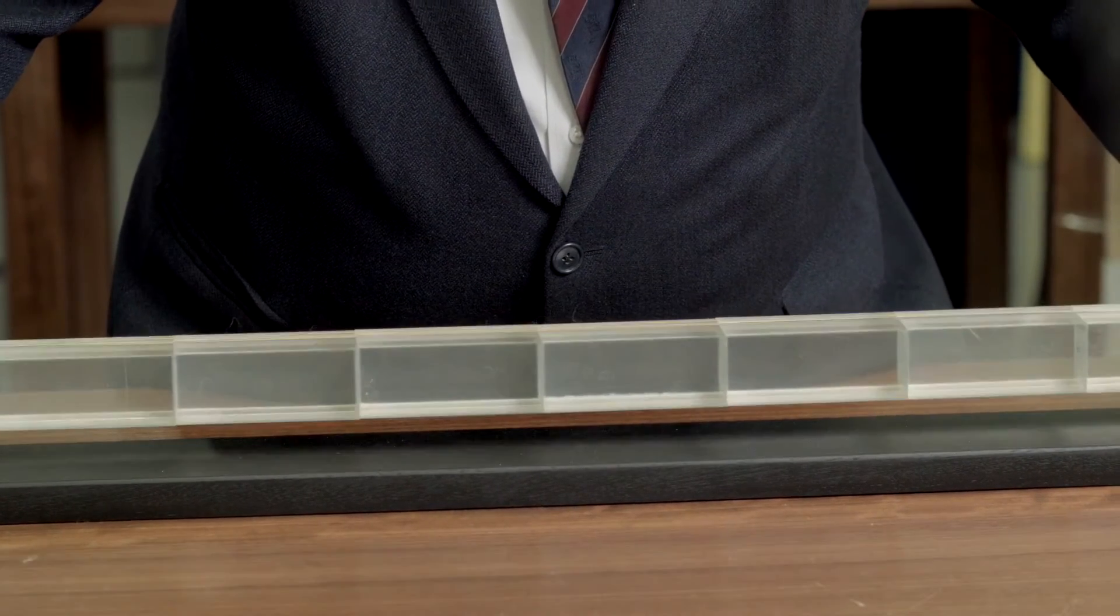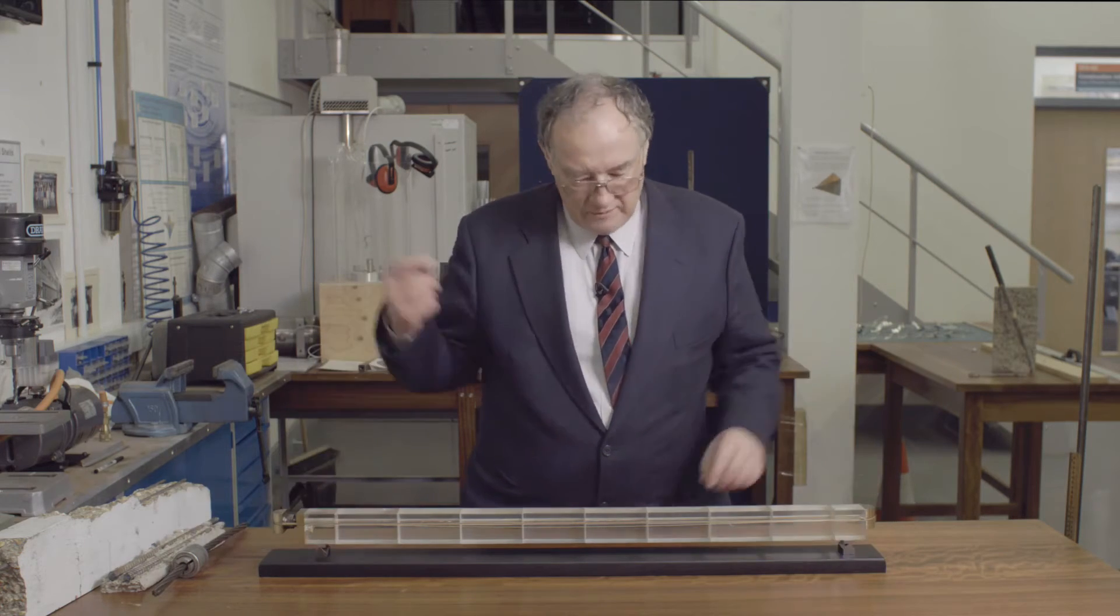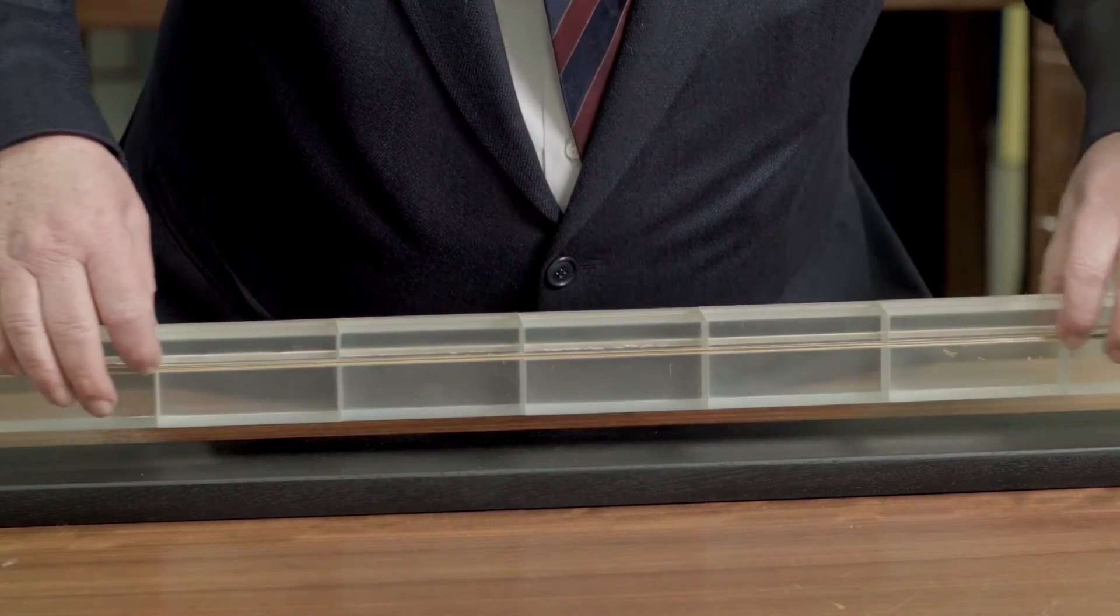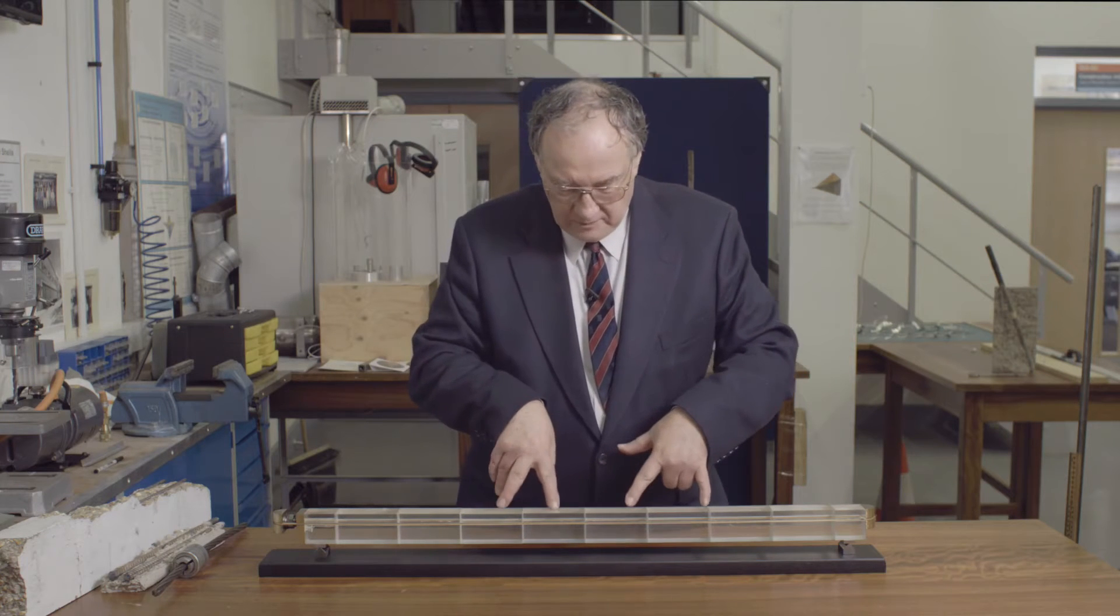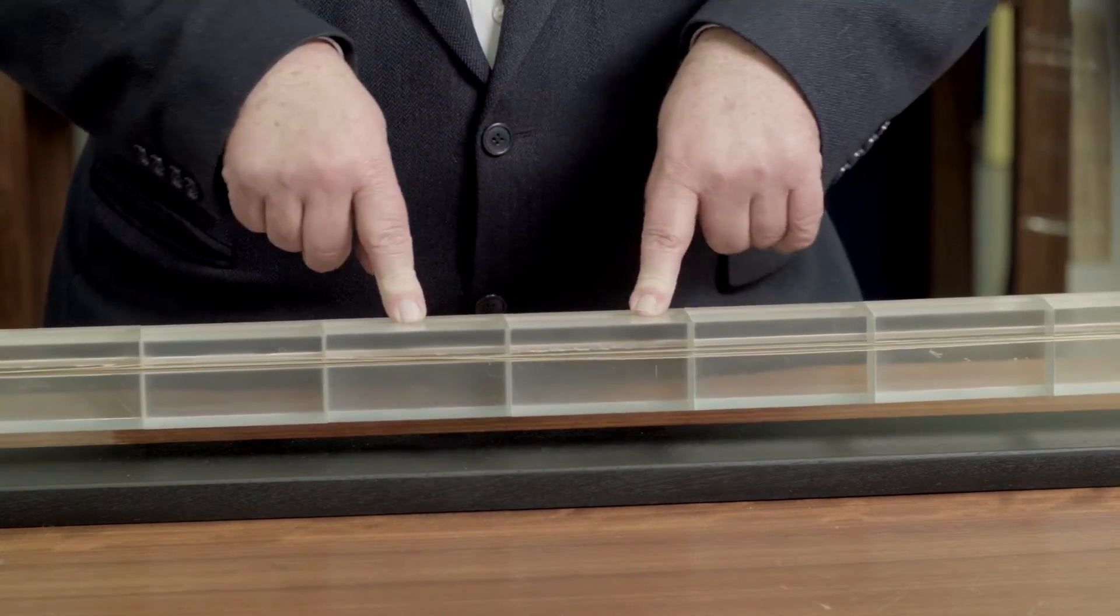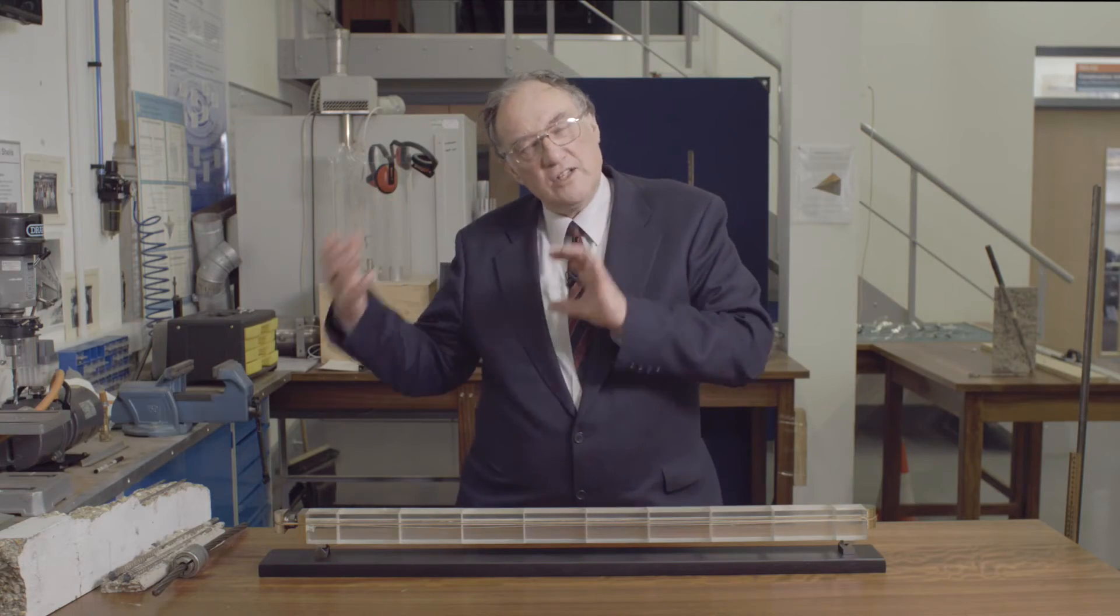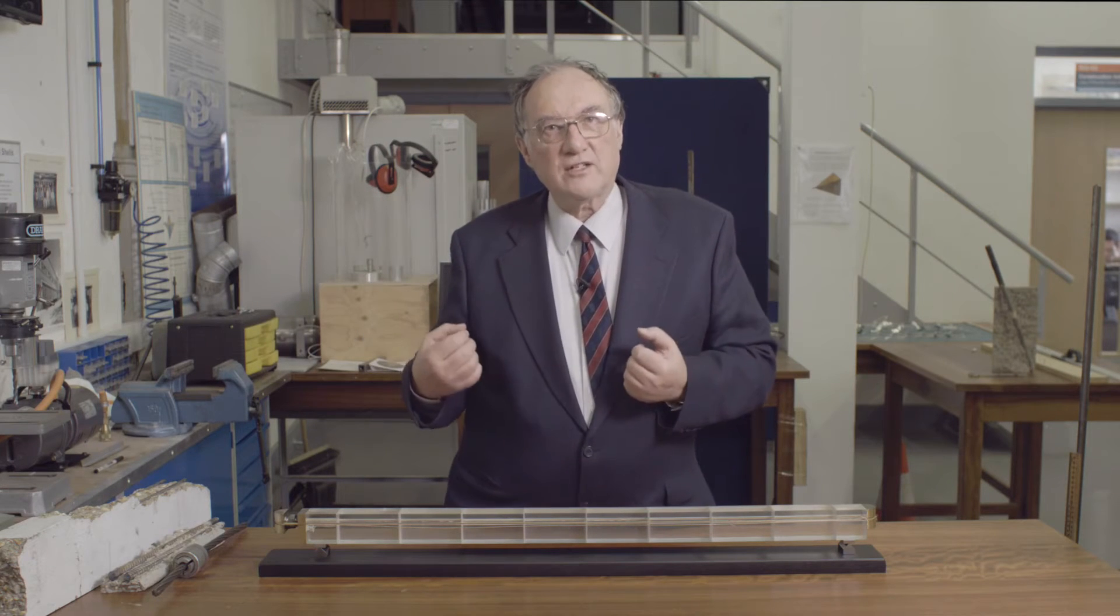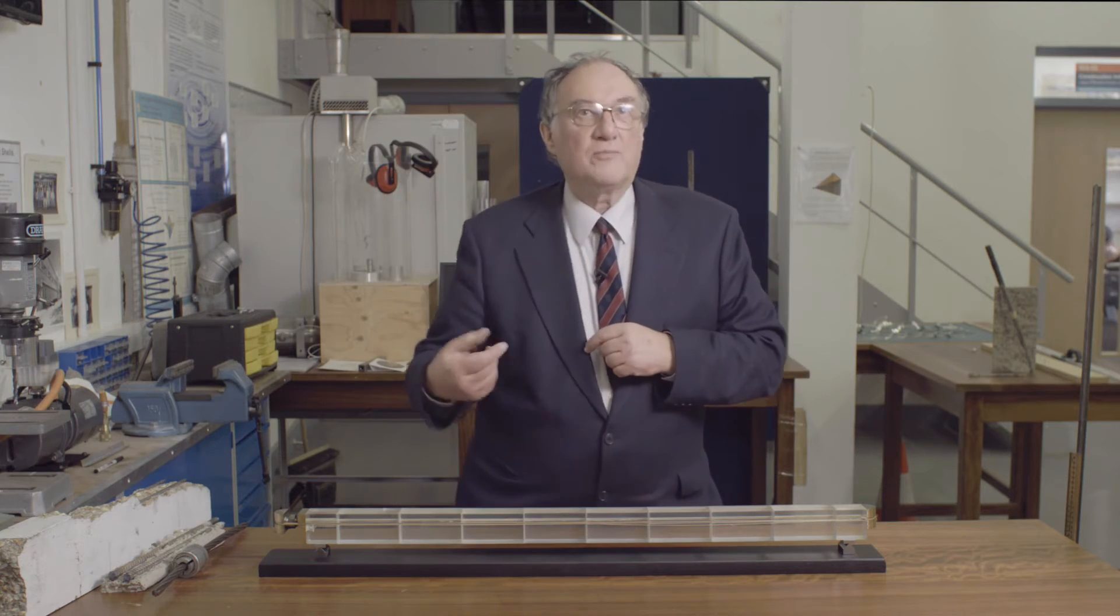If I turn the beam over, which I can do on my model but I can't do in the real world, the tendon is now towards the top of the beam. And the effect of this is that it's not good for carrying bending with tension in the bottom. So I need to put very tiny forces onto this beam before the cracks start to open up at the bottom of the beam. And this illustrates the point that engineers need to take account of the loading that they expect to come onto their structure and therefore choose to put the tendon in the appropriate position.